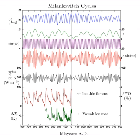Effect on temperature: The semi-major axis is a constant. Therefore, when Earth's orbit becomes more eccentric, the semi-minor axis shortens.